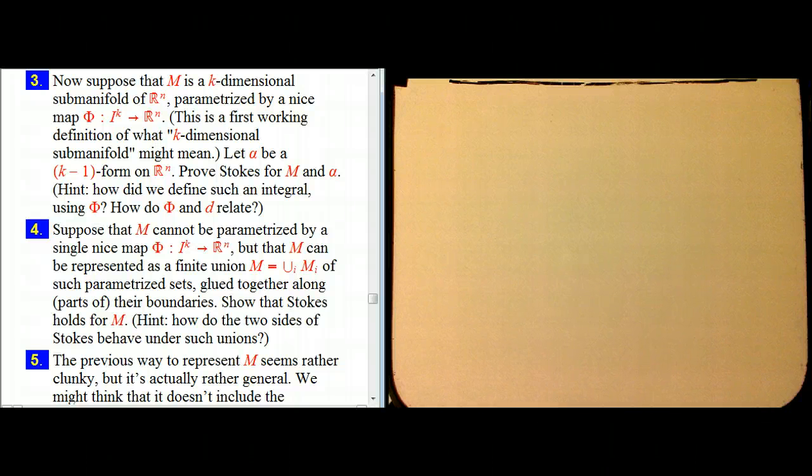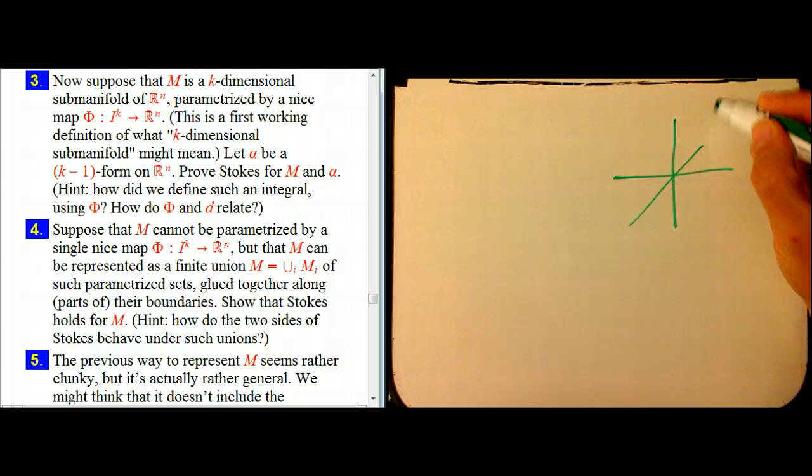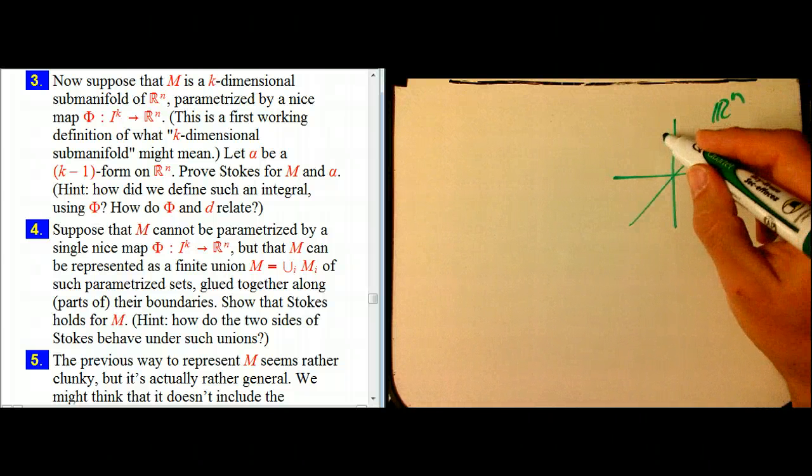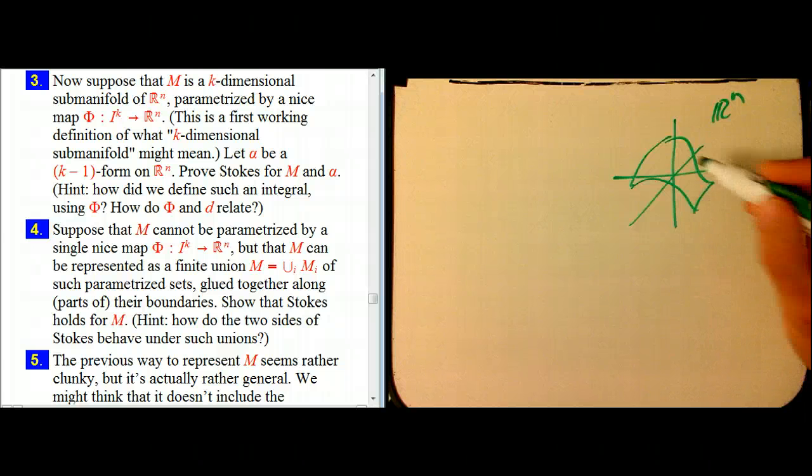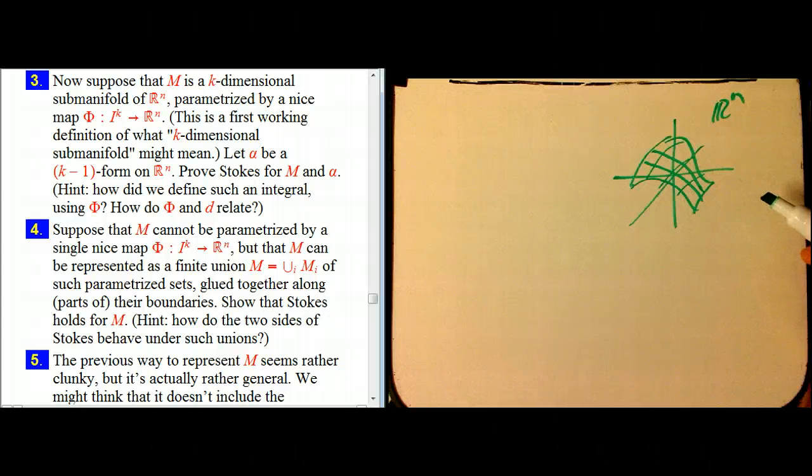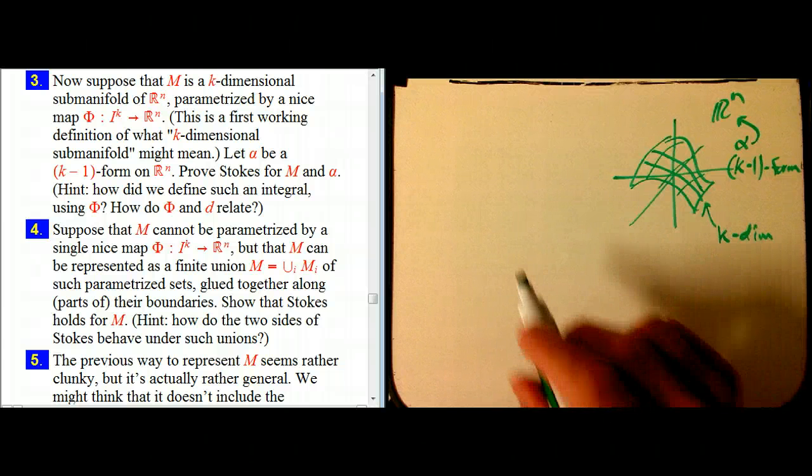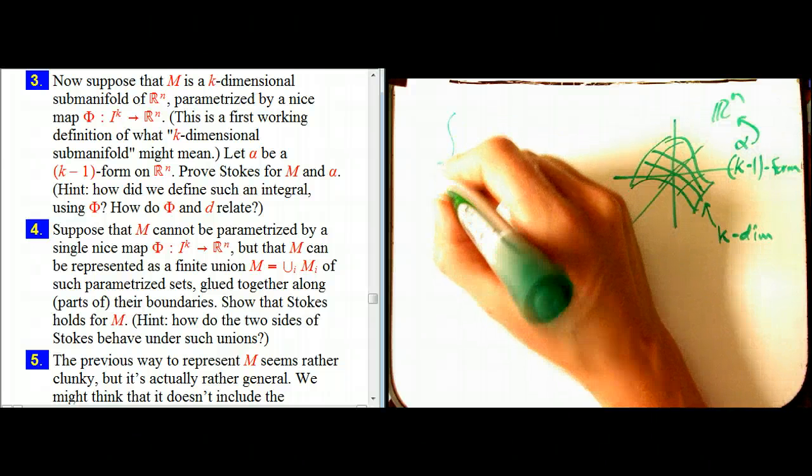But now let's look at number three here. We really want to have a situation where we have Rn and then we have some subset inside there. So I'm going to draw it as this two-dimensional surface in R3, but it's going to be completely general. And I have a form alpha that lives in Rn and it's going to be a k-1 form. And then this guy is k-dimensional.